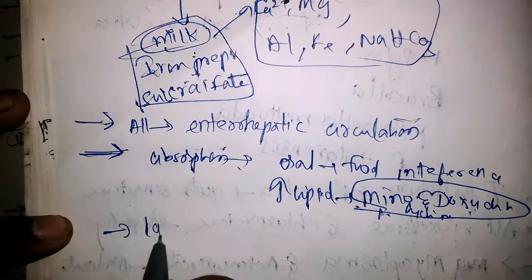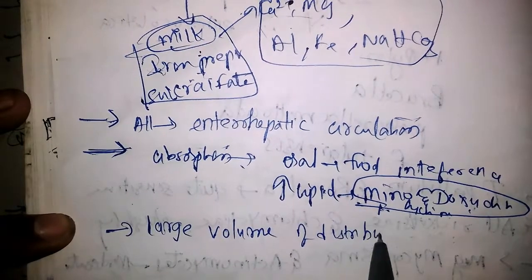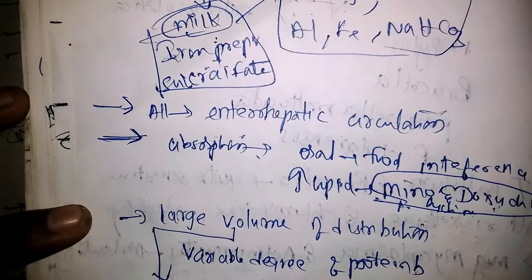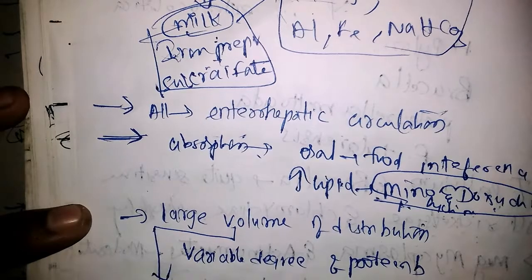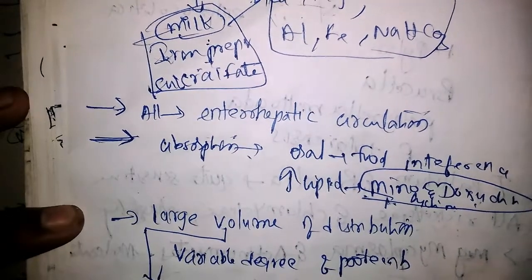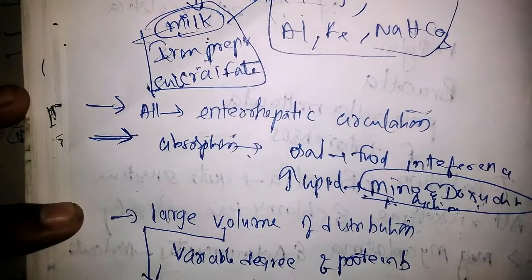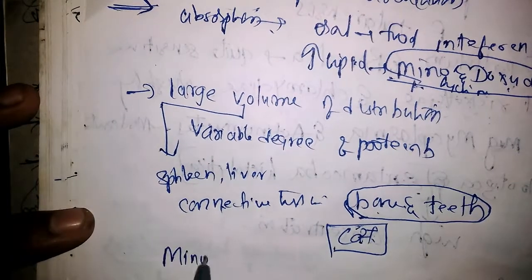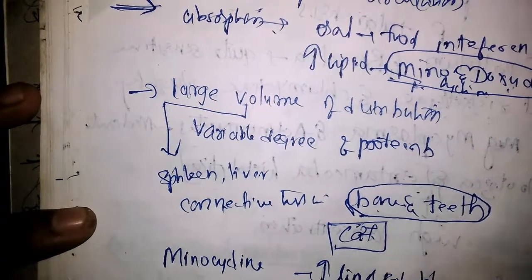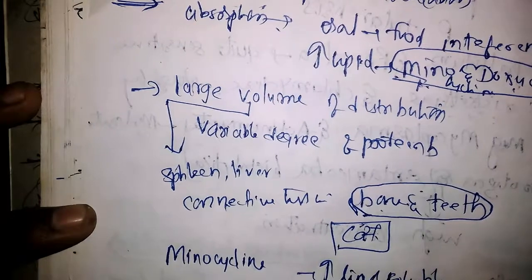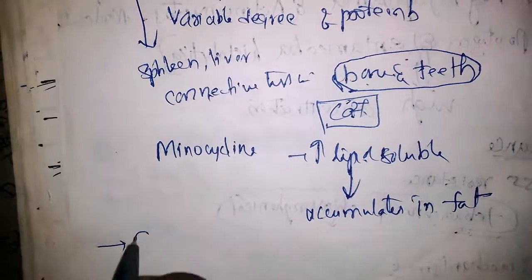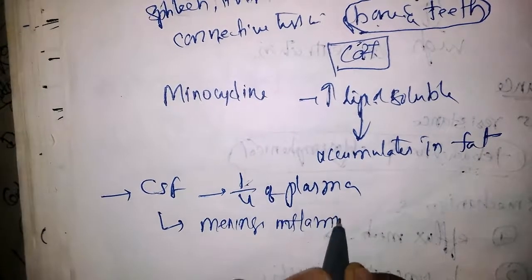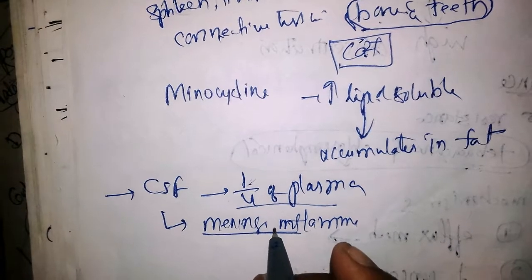After absorption, tetracyclines have a large volume of distribution and variable degree of protein binding. They accumulate in spleen, liver, and connective tissue of bone and teeth, because tetracyclines chelate calcium which is present in bone and teeth. Minocycline, being more lipid-soluble, accumulates in fat. In the CSF, the concentration is one-fourth of plasma concentration, even when the meninges are not inflamed.